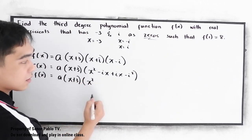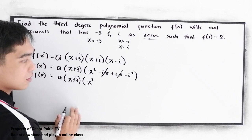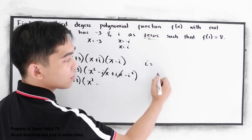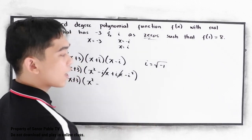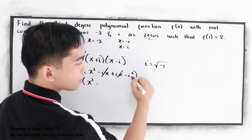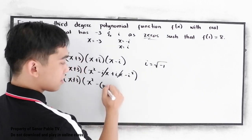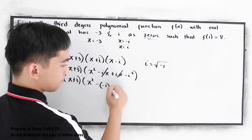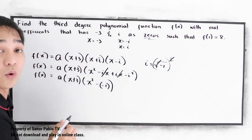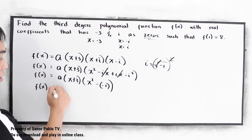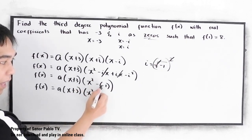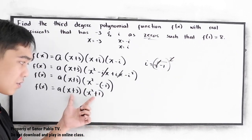Now combine like terms. So f of x is equal to a times x plus 3, and we have x squared. The negative ix and positive ix cancel out. We know that i is equal to the square root of negative 1, so i squared equals negative 1, which means negative i squared becomes positive 1. So f of x is equal to a times x plus 3, times x squared plus 1.